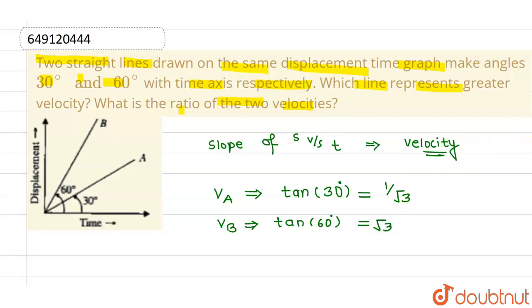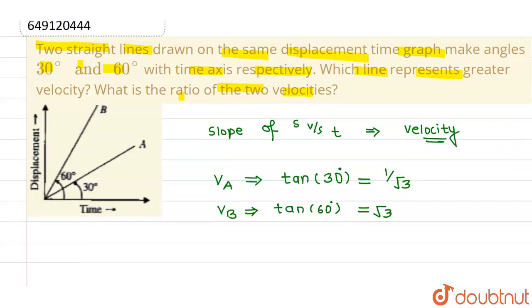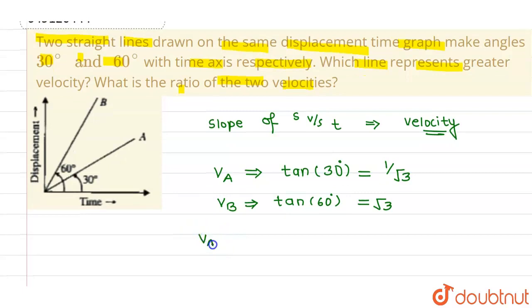So if we have to find out the ratio of two velocities, that means VA/VB, so this will be equal to (1/√3) divided by √3, so this can be written as 1/3. This is the ratio.